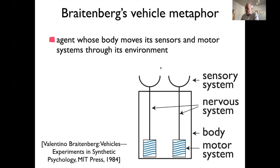You can think of these vehicles as models of agents consisting of four components: sensors, symbolized by little parabolas; motors, like wheels seen from the top, which generate movement; a nervous system connecting the sensor outputs to the motor inputs; and the body, which means that when the motors generate action, the sensors move along with the body, creating new sensory information in the world.